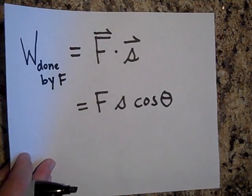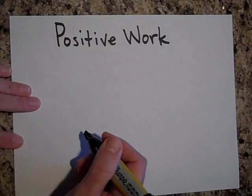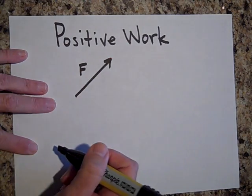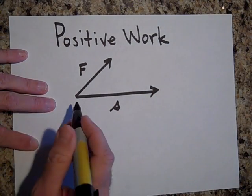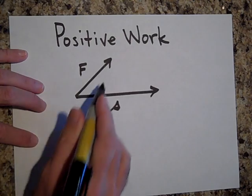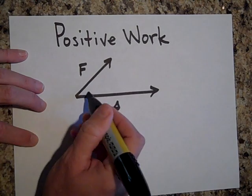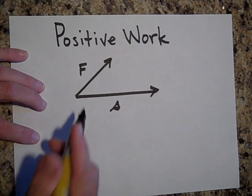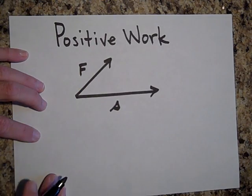Whenever the force has a component that's in the direction of S — S is displacement — then that's going to be positive work. Because there's a part of F in the direction of S, if you put say 30 degrees in there you'll get a positive result. So any time the force has any component in the direction of S, positive work is done.